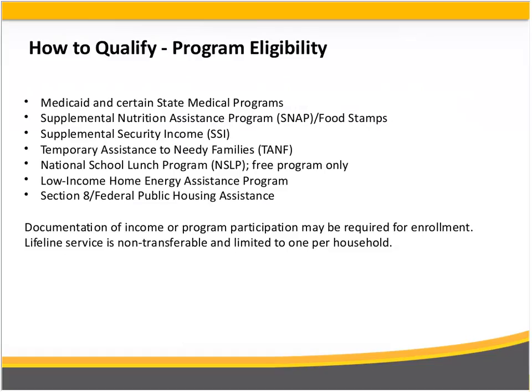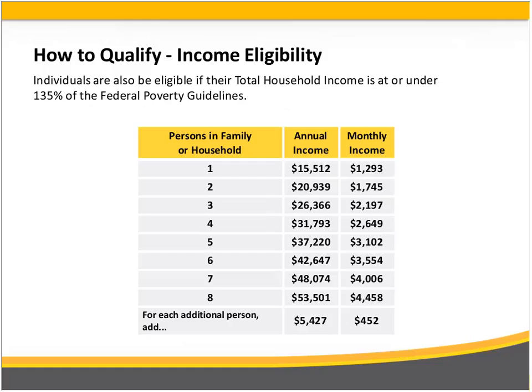To qualify for SafeLink, individuals can qualify under several programs. If someone is receiving Medicaid, they would automatically be eligible. Low-income housing, TANF, Supplemental Security Income, SNAP, and Section 8 housing are generally automatic qualifiers across most states — the individual just needs to prove they're already receiving that support. You can also qualify based on income, typically at or below 135% of the federal poverty line, though it varies by state. It's easy to check eligibility requirements online at SafeLink or on the application, and we make it as simple as possible for both agencies and individuals.